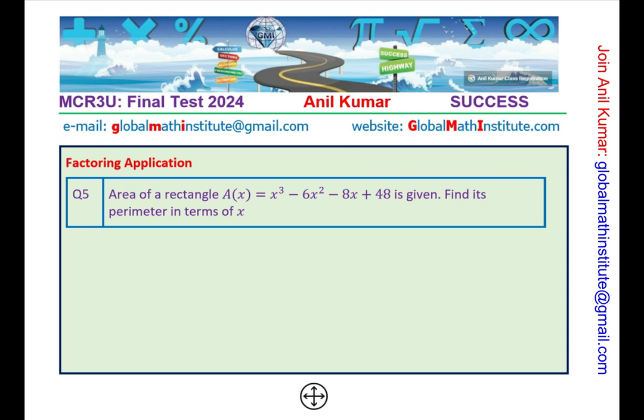Let's move on to the next question on factoring skills. We have taken a cubic function to factor. Question number 5, area of a rectangle A(x) = x³ - 6x² - 8x + 48 is given. Find its perimeter in terms of x. The questions in general are slightly more challenging than what you normally get. But in case you understand how to solve these questions, you are much better off. In case you need a PDF of this particular question set, send an email on globalmathinstitute at gmail.com. We will be providing the solutions of these questions in the playlist, so check our playlist for the solutions.